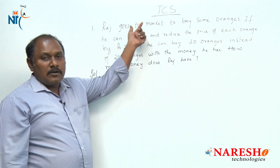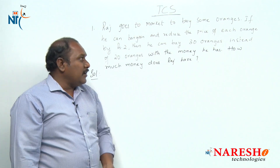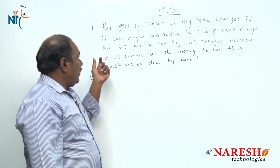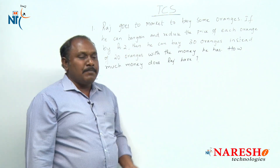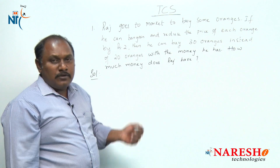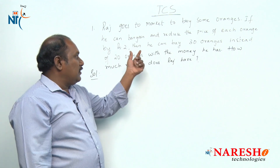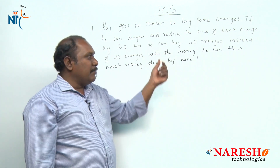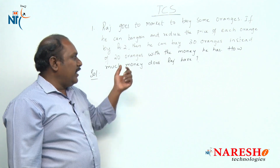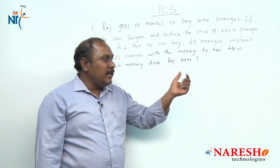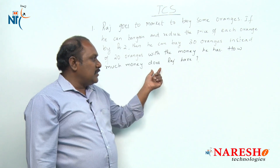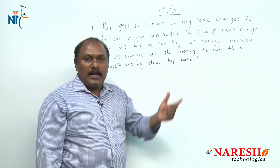Raj goes to market to buy some oranges. If he can bargain and reduce the price of each orange by rupees 2, then he can buy 30 oranges instead of 20 oranges with the money he has. How much money does Raj have?